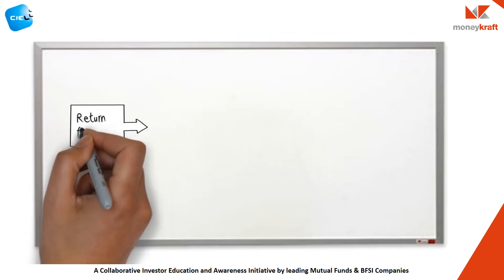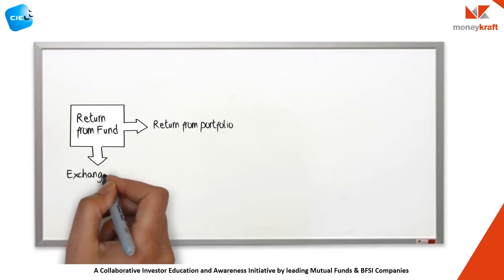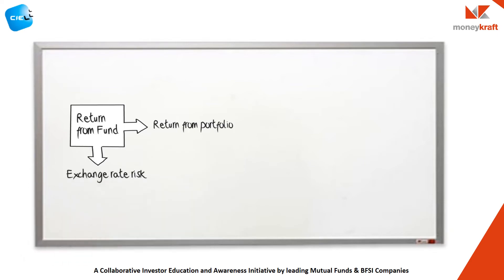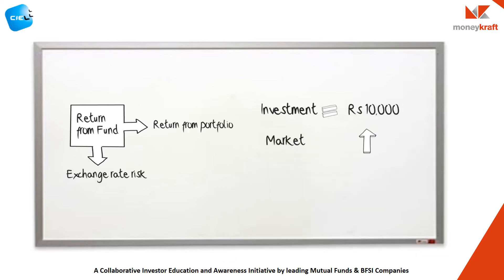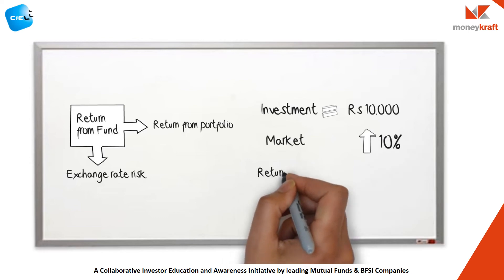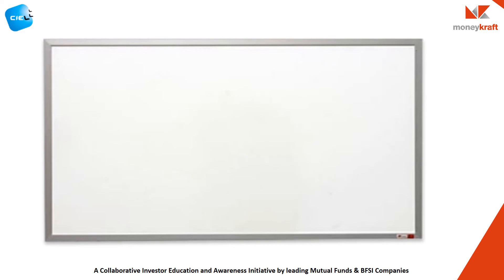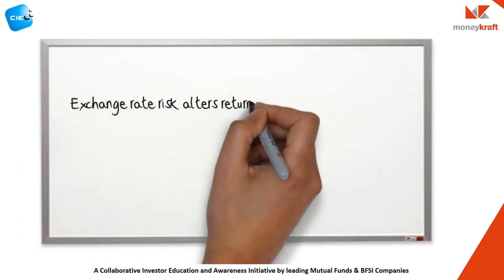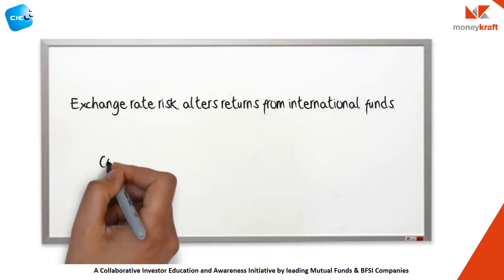The return from a global fund will be significantly modified by exchange rate risk. For example, if 10,000 rupees is invested in such a fund and the market it invests in moves up by 10%, the return to the investor may be more or less than 10% depending on what happened to the exchange rate. Exchange rate risk can significantly alter the return from international funds.